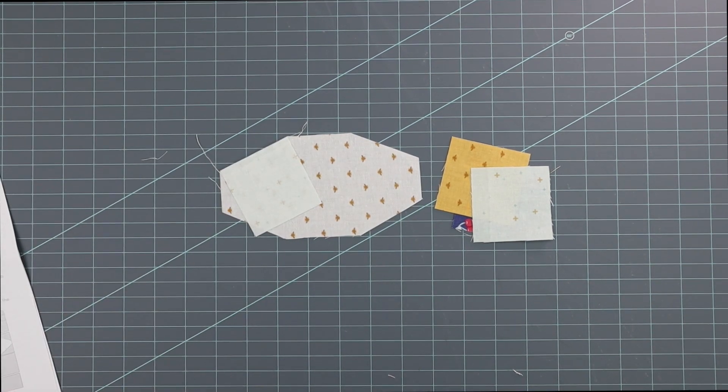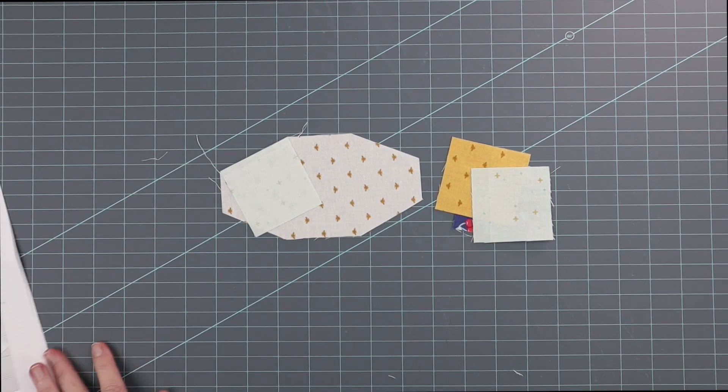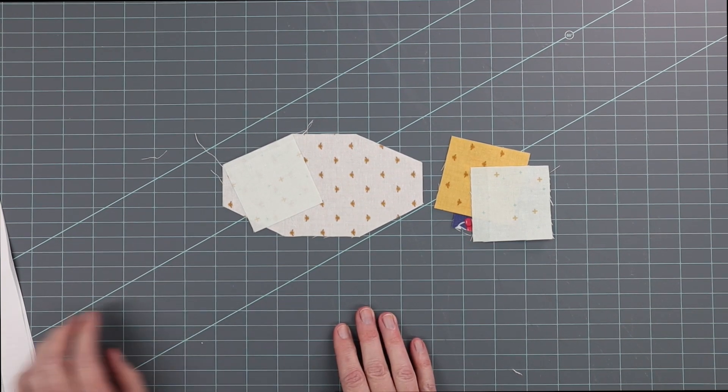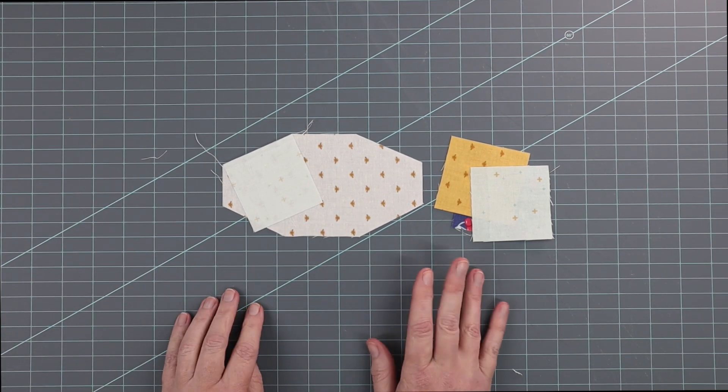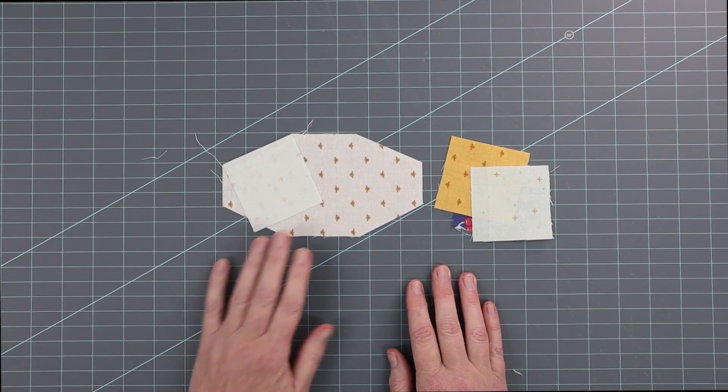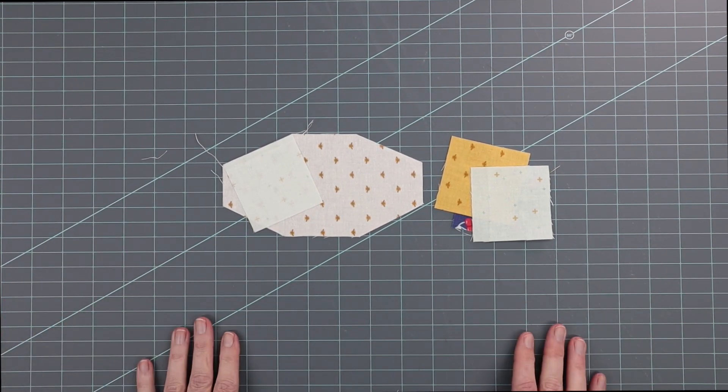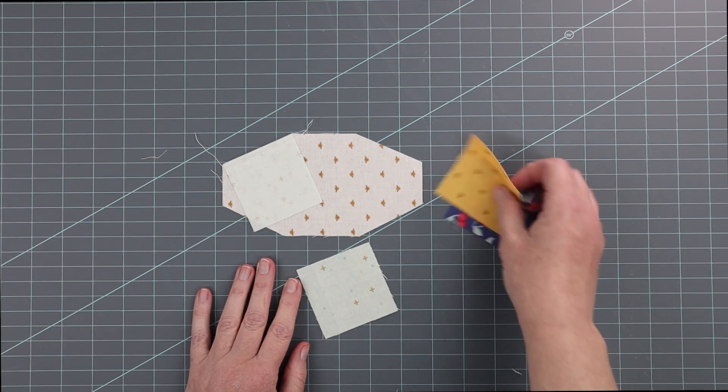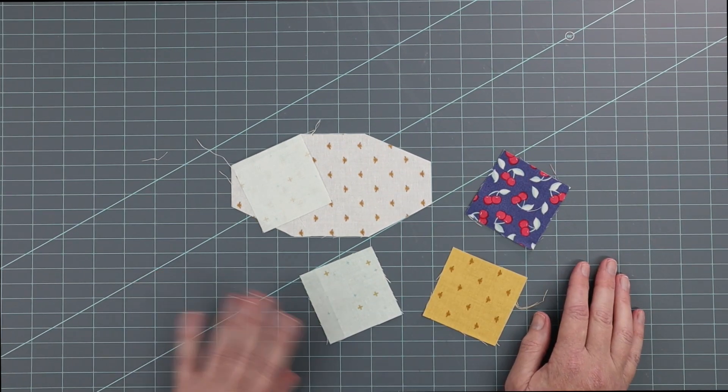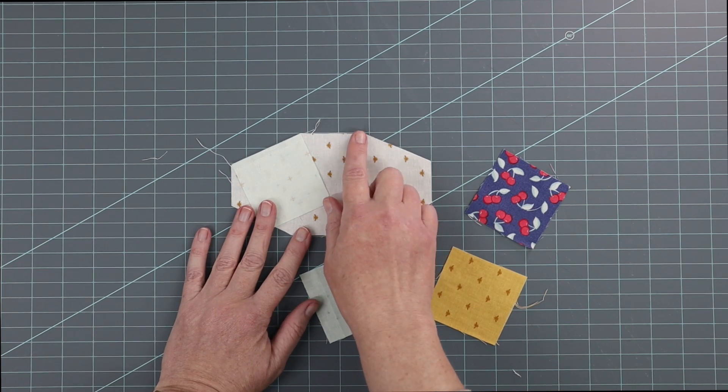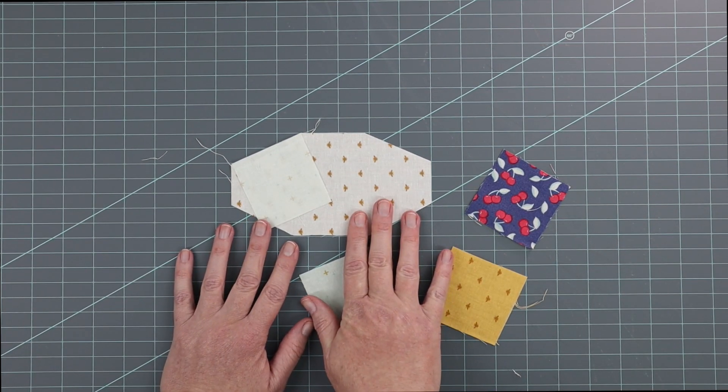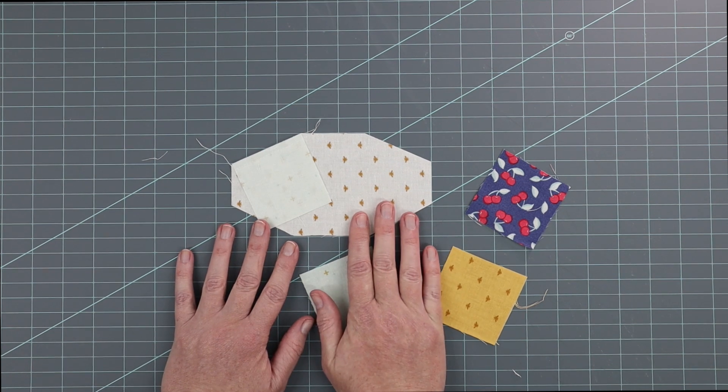The first thing we're going to do for the bee block is create the wing sections. I don't know what this technique is called—it's just something that I kind of came up with a couple years ago and it's one I like to use a lot. This technique allows you to create different angles on your blocks without using foundation paper piecing.